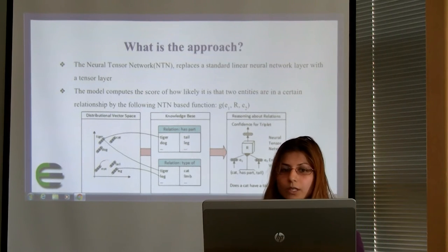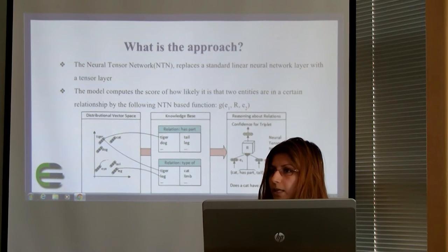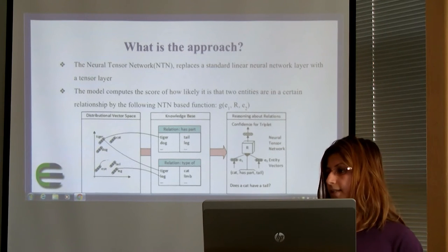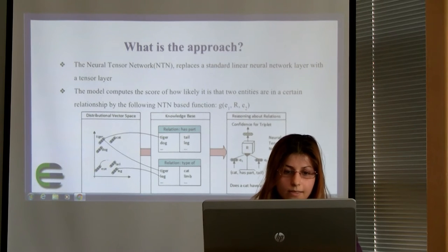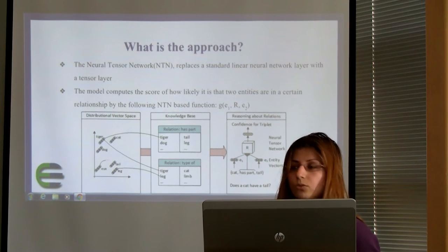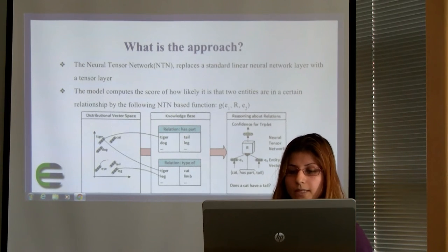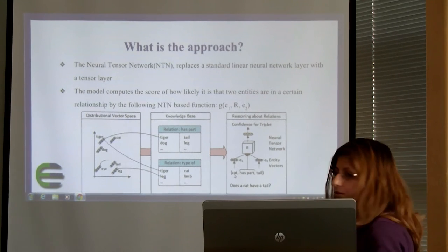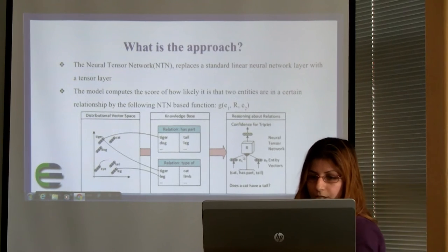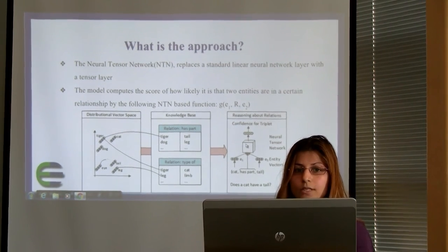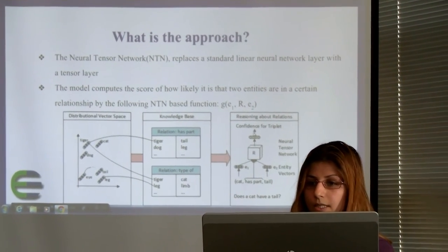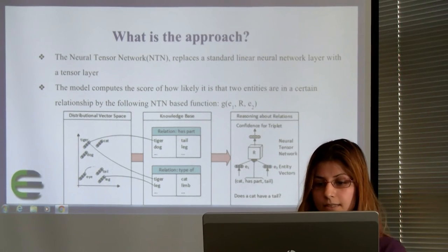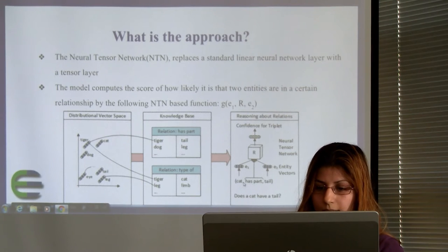What is neural tensor network? Neural tensor network is replacing the standard linear neural network layer that we have with the tensor neural network. What is the tensor? The tensor is a multi-dimensional matrix. So using the tensors, we want to compute the likelihood of being two entities in a certain relationship. For example, here in the picture, we have a vector for cat and also vector for tail. We want to have a representation for relationship among them through the neural tensor. And using this neural tensor network, we want to see what is the confidence for this triplet.